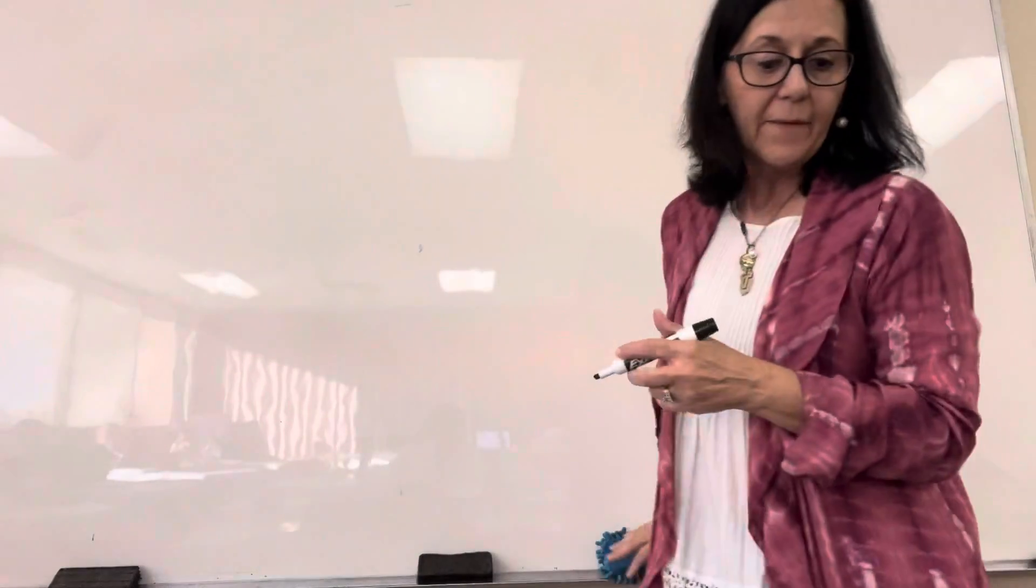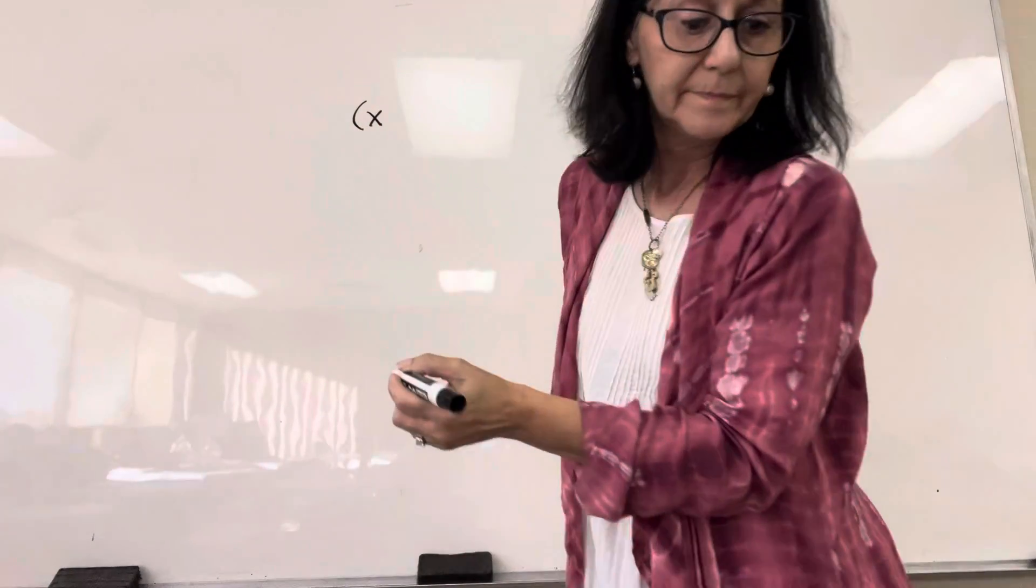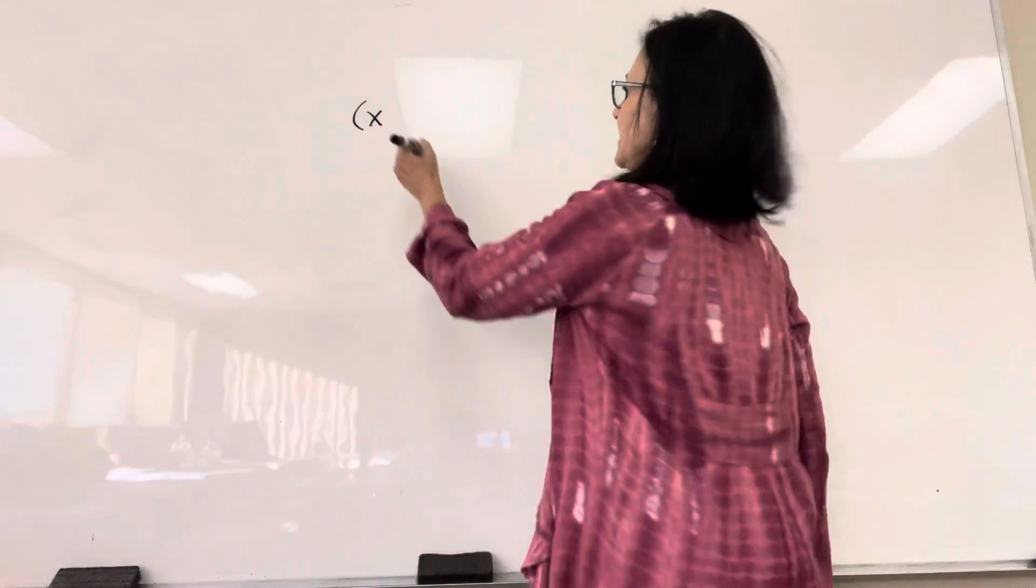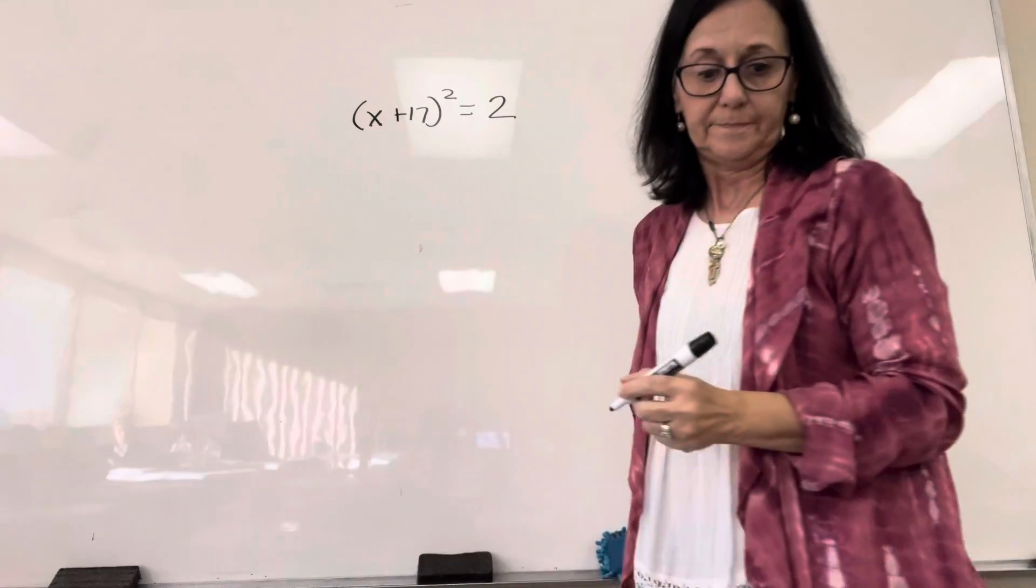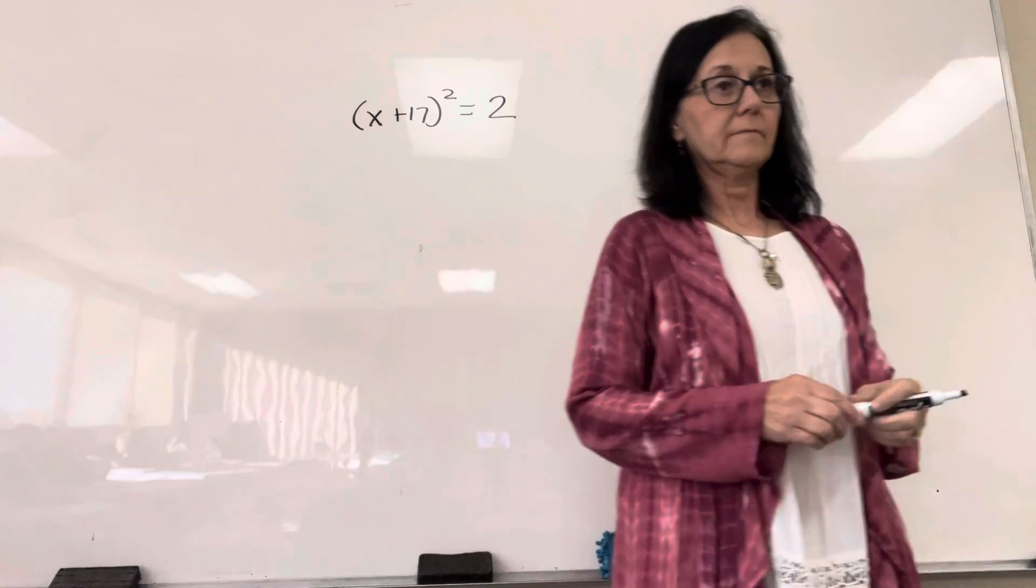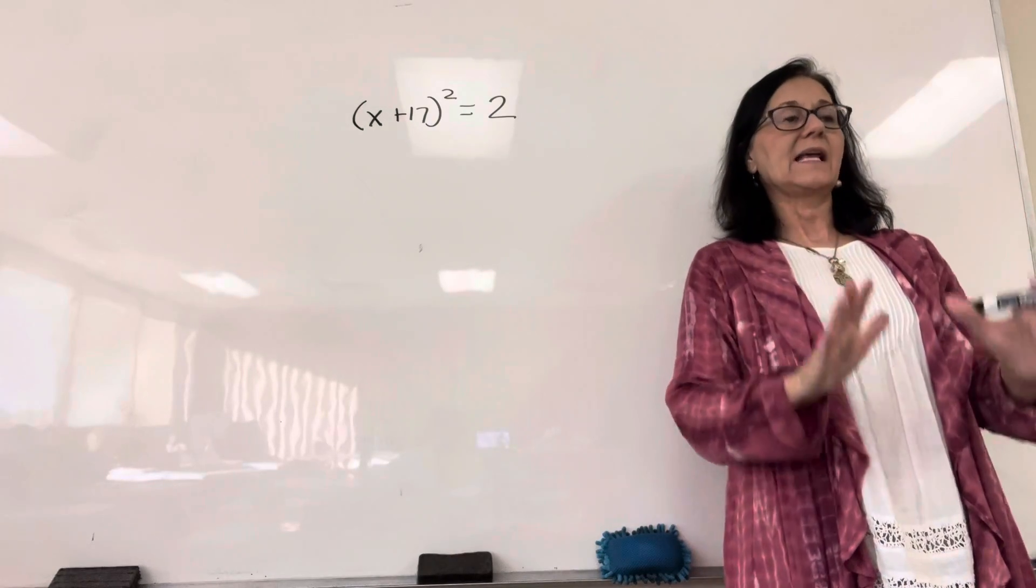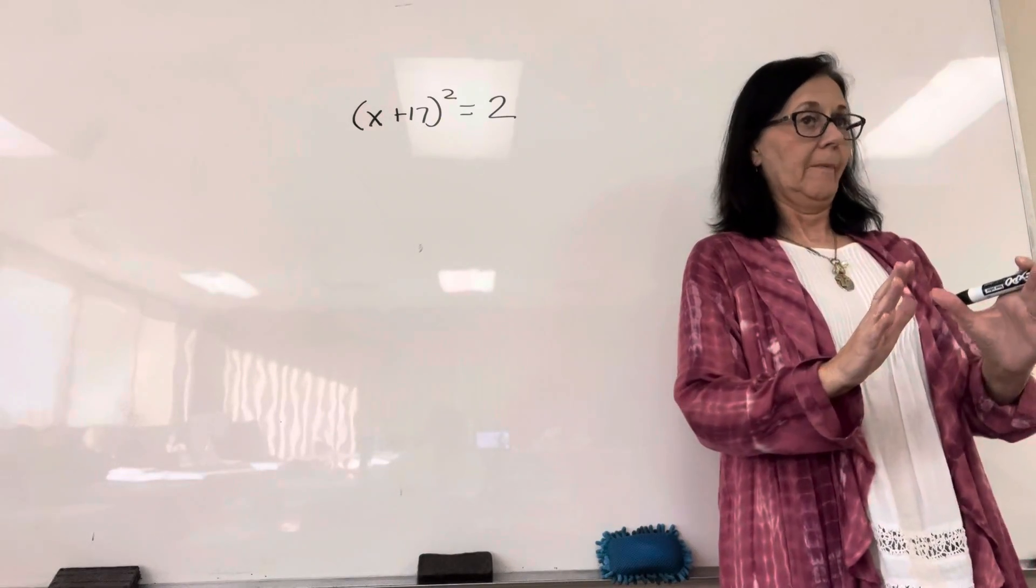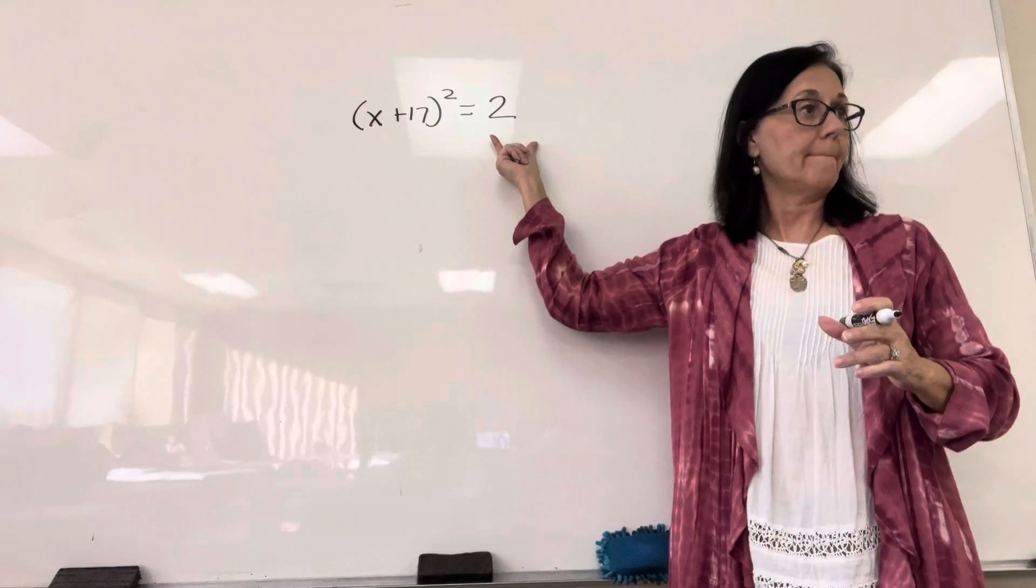So, look at example 1. It's (x + 17) squared equals 2. Okay, here's what always, always has to be true. You have a term squared equals a positive number.